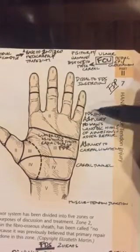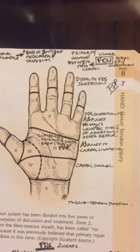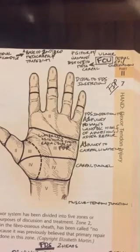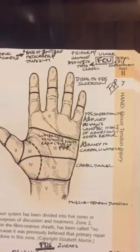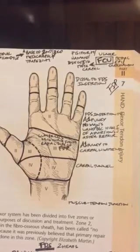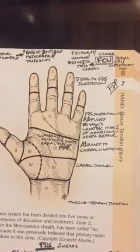This is called no man's land because historically with some of the previous reconstructive methods, they've gotten a little bit better nowadays, you would have a high risk for fibrous adhesions because of the fibro-osseous tunnels that are made of the pulleys. This is the most important area to get your reconstruction done well.